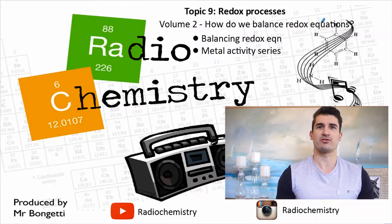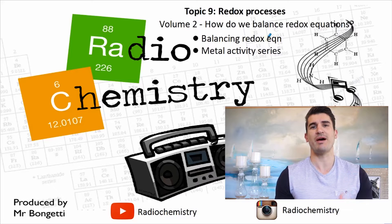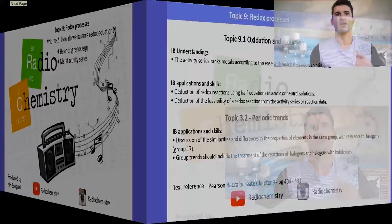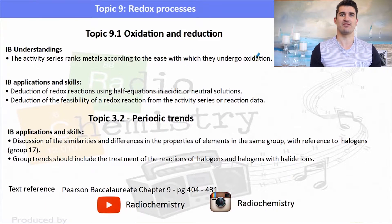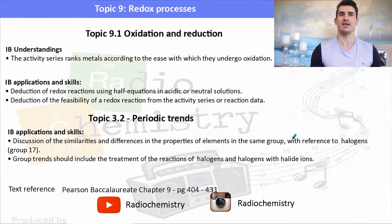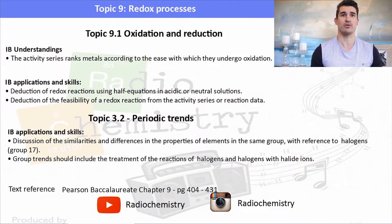Volume 2: How Do We Balance A Redox Equation? We look at balancing redox equations and then we look at a metal activity series. The IB understandings cover this metal activity series and then using half equations to write the overall balanced equation. I'm also going to include some 3.2 content where we talk about how halogens can react with halides.